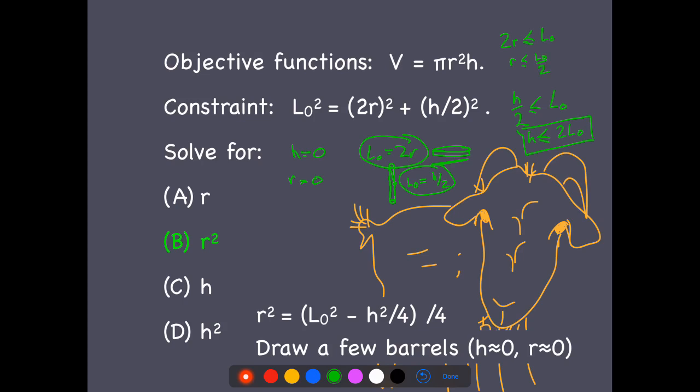And clearly when 2r is equal to L₀, that was the case of h equals 0. So instead of thinking about this constraint here, we're going to just replace it with a simple h equals 0.